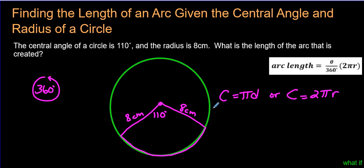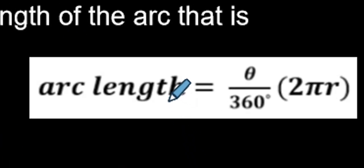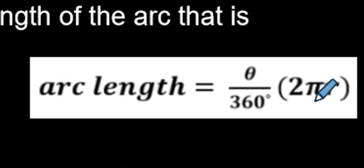So this comes into making a formula where we want to take the circumference of the circle, and then find out what percent the 110 degrees would be out of 360 degrees. And that's where this formula comes into play right here. And that's this formula on arc length equals theta over 360, multiplied by 2 times pi times r.